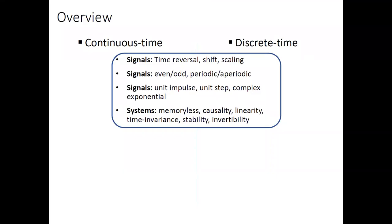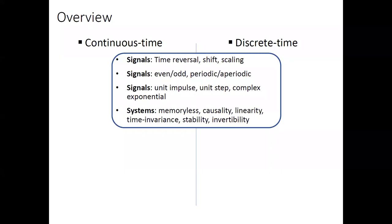We learned signals and systems this semester, and our study falls in two categories: continuous time and discrete time, because signals are basically functions over independent variables. In this class, the independent variables are time — continuous time T, or discrete time N. After learning various transformations, the independent variables might be frequency omega, the complex number S, or the complex number on the unit circle, denoted by Z.